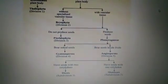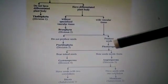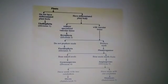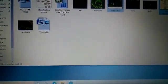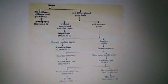After Gymnosperms comes Angiosperms. In Angiosperms, the plant body is differentiated, vascular tissues are present, they produce seeds, and the seeds are present inside the fruit. You will get all these points from this flowchart. First learn this flowchart and then write all these points in your notebook.